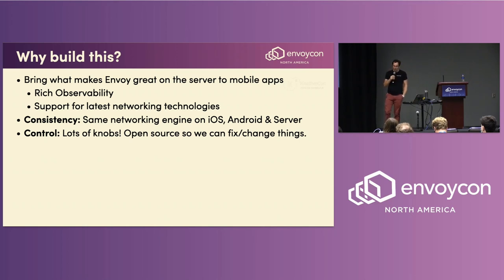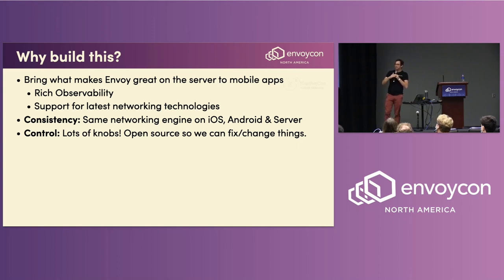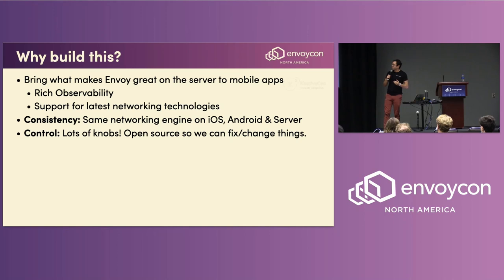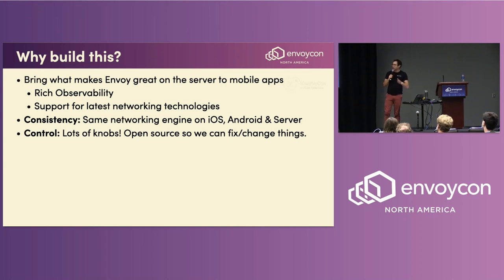Another layer that bringing Envoy to mobile gets us is control. The network engines that ship with the OS are powerful and fine-tuned, but they target the vast majority of use cases and don't expose many ways to fine-tune for your specific needs. If you're building a product with a well-known usage pattern where every byte matters, you probably want to say, for example, that these endpoints speak H2 — so skip the whole ALPN process.